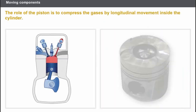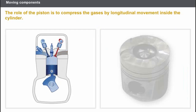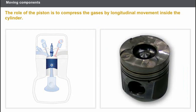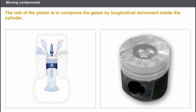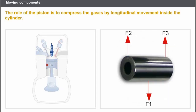The role of the piston is to compress the gases by longitudinal movement inside the cylinder. The piston is composed of the following components: a cylindrical shaped head with a diameter slightly less than the diameter of the cylinder, a skirt which guides it inside the cylinder, and a gudgeon pin which provides the link with the connecting rod.